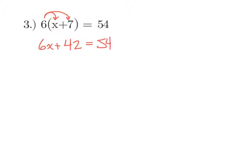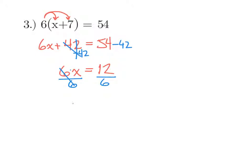Once we distribute that 6, it's just like every other problem. The first thing we want to do is deal with the adding and subtracting — we see plus 42, so we subtract 42 from each side. On the left we're left with 6x, and on the right 54 minus 42 is 12. Now 6x means 6 times x, so we divide both sides by 6. Those cancel and we're left with x equals 12 divided by 6, which is 2.